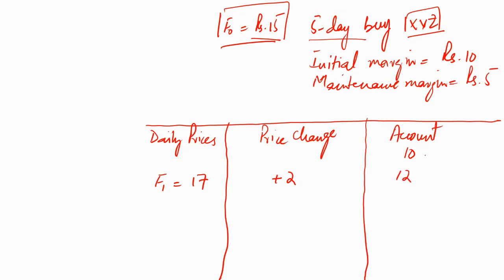Our margin account will be credited by 2 rupees, increasing it to 12. Any amount above the initial margin can be withdrawn or left to earn interest — this does happen in normal exchange operations. On day 2 the price fell to 13 rupees (F2). This is a decrease of 4 rupees from day one, so we write minus 4 and decrease the margin account by 4, bringing it to 8. Since we are still above the maintenance margin of 5, we will not receive any margin call.